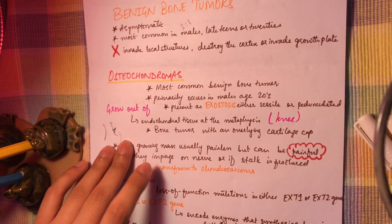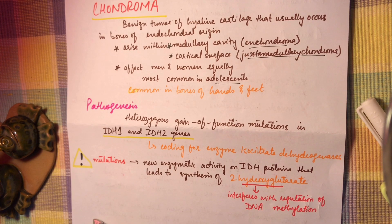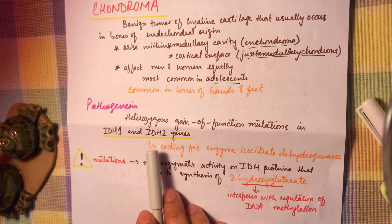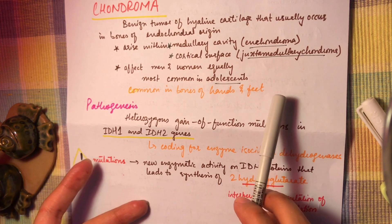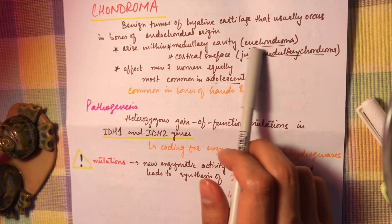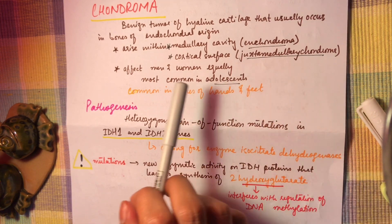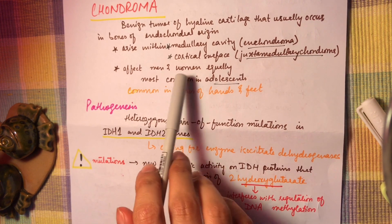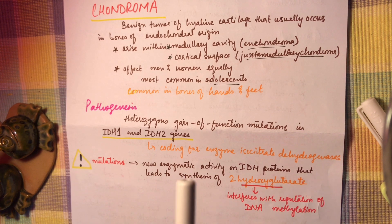Chondroma is a benign tumor of hyaline cartilage that usually occurs in bones of endochondral origin. When it arises in the medullary cavity it is called an enchondroma; when it arises in the cortical surface it is called a juxtacortical chondroma. Chondromas affect men and women equally and most commonly occur in adolescence, affecting the bones of the hands and feet.